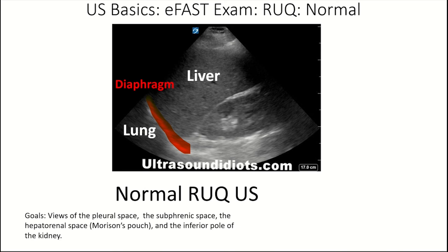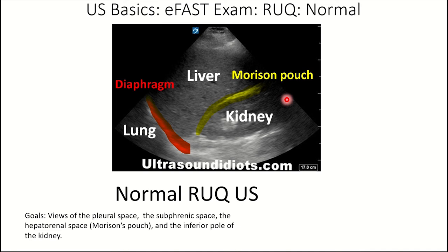The kidney can be identified by the hypoechoic black-appearing tissue with bright white tissue inside — that white tissue represents the renal calyces coming together to form the renal pelvis. In between the liver and kidney is Morrison's pouch, a potential space also called the hepatorenal recess. When doing this ultrasound, make sure you look at the pleural space, the subphrenic or subdiaphragmatic space, the hepatorenal space, and the inferior pole of the kidney.